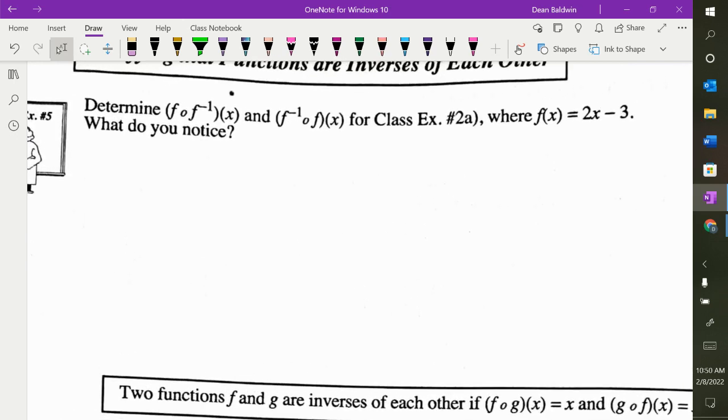We're back to these things. What does this little open circle mean again? You're putting one function into another function. So in this case, what does the f to the minus 1 mean? Inverse. So we are putting the inverse into the original. And this one here is the original into the inverse.